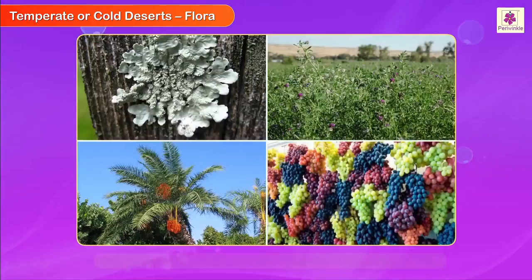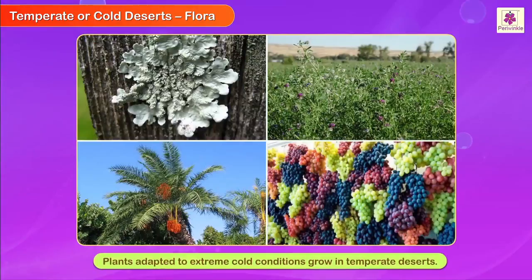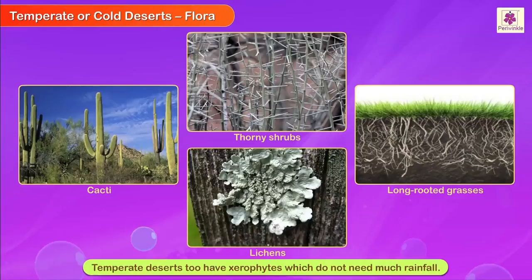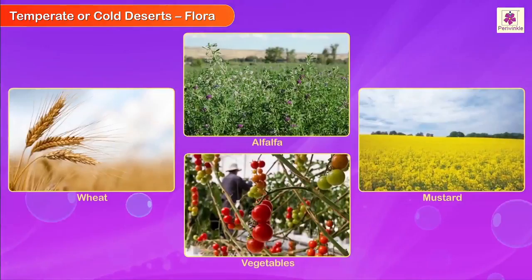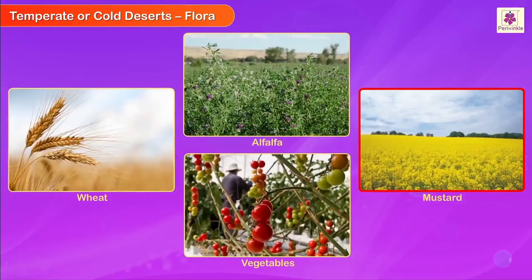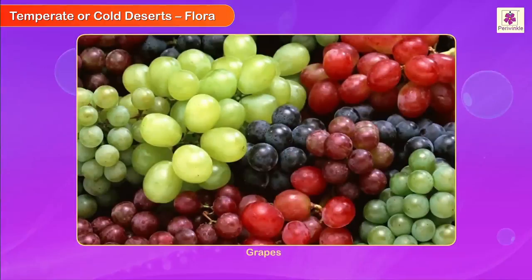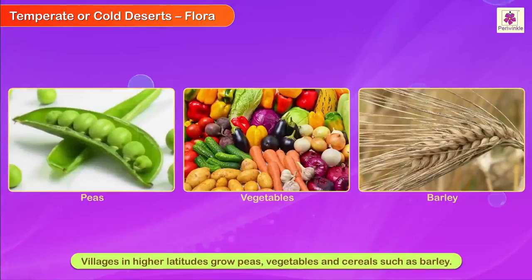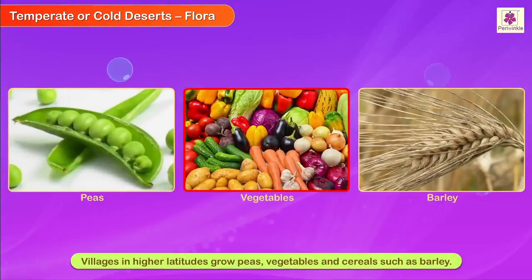Flora: Plants adapted to extreme cold conditions grow in temperate deserts. Like tropical deserts, temperate deserts also have xerophytes like cacti, thorny shrubs, long-rooted grasses, and lichens which do not need much rainfall. Villages in mid-latitudes grow crops like wheat, alfalfa, mustard for extracting oil, and many varieties of vegetables. Different varieties of grapes are also grown here. Date palms are seen mostly around oases. Villages in higher latitudes grow peas, vegetables, and cereals such as barley.